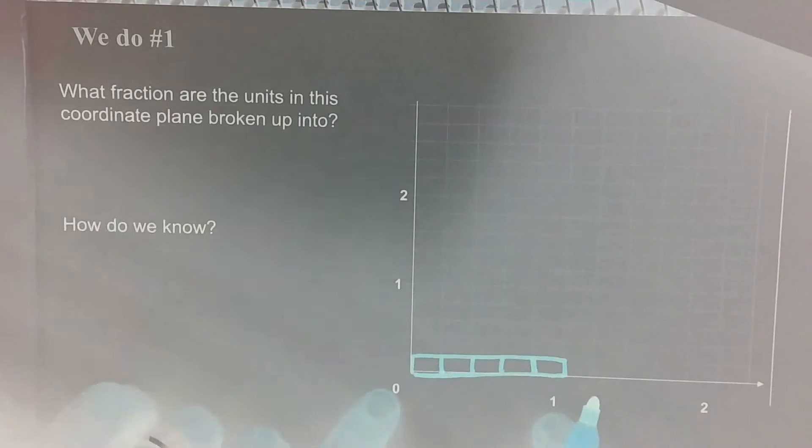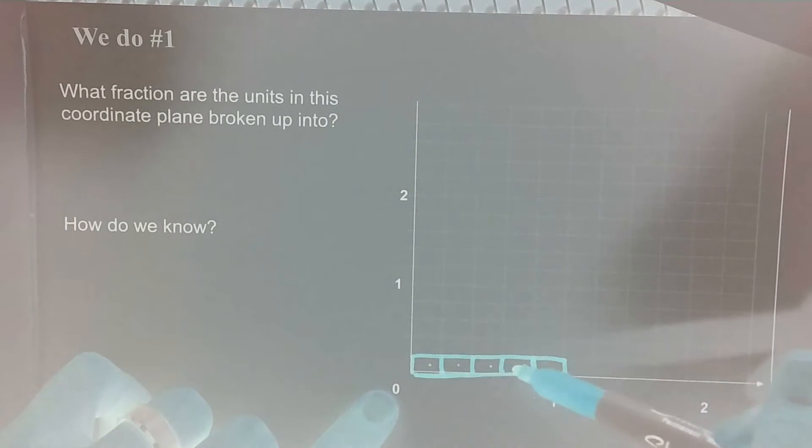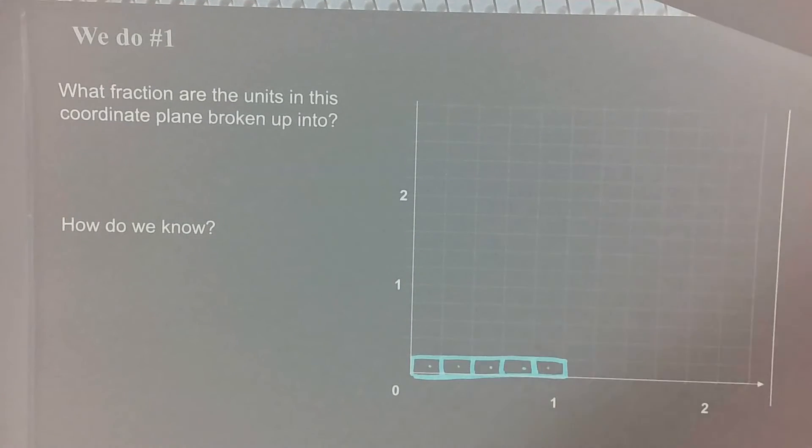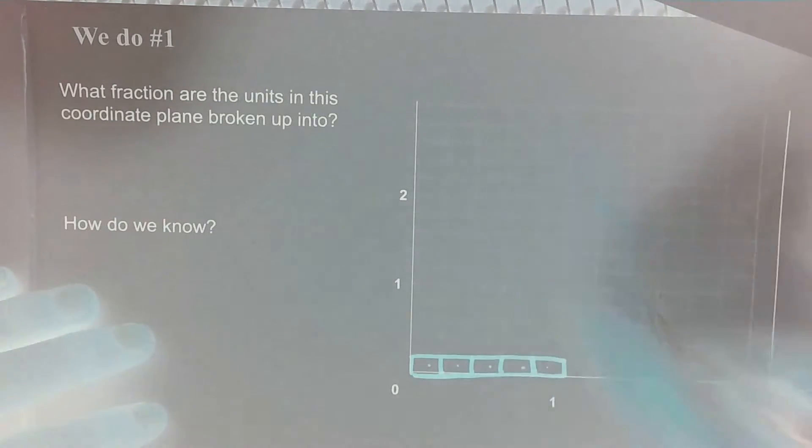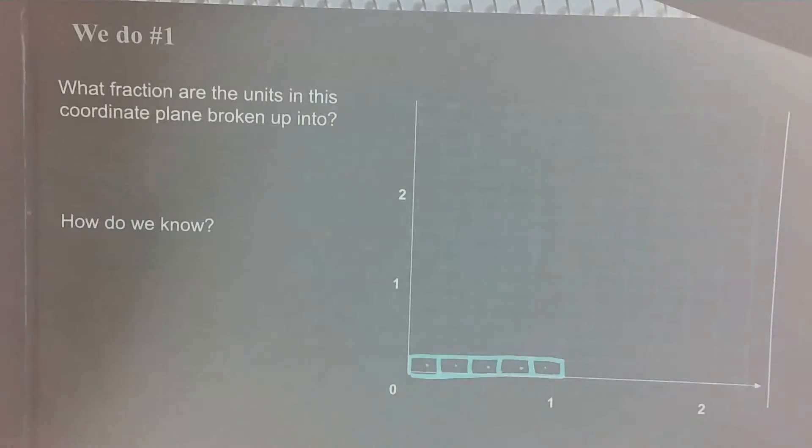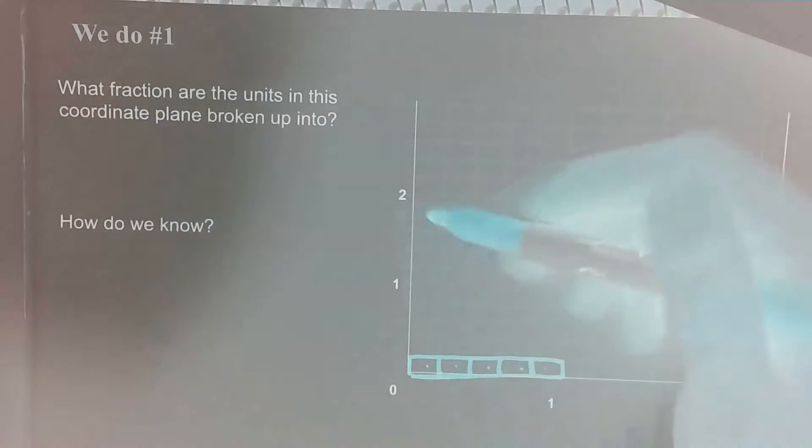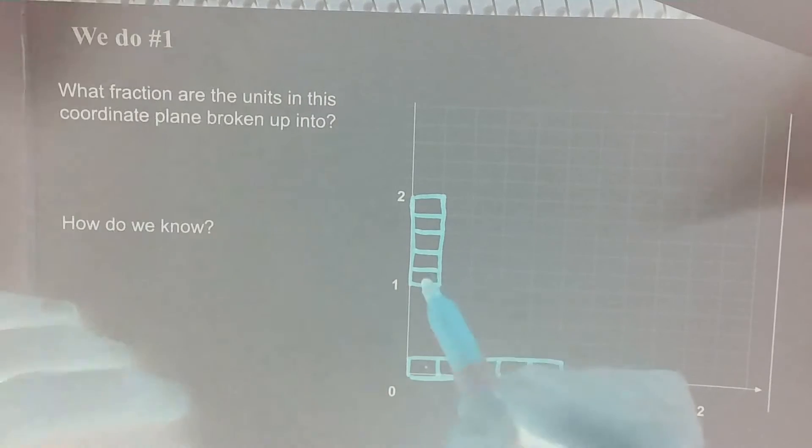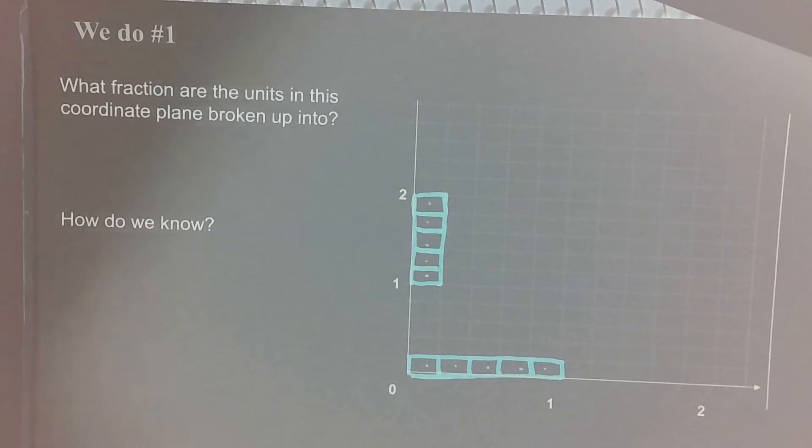So now we've created a fraction between zero and one and it's partitioned into one, two, three, four, five equal parts. So our coordinate grid is broken up into fifths. Let's double check the y-axis to make sure it's also broken up into fifths. Here I'm going to go between the one and the two because the distance between any of our numbers is going to be the same. So from zero to one is going to be the same distance as from one to two. Let's make a tape diagram from one to two on the y-axis and partition it right on the coordinate lines. And again, it's broken up into one, two, three, four, five equal parts. So we know that both the x and y-axis are broken up into fifths.